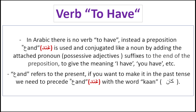In Arabic, there is no verb 'to have.' Instead, a preposition عند is used and conjugated like a noun by adding the attached pronoun suffixes to the end of the preposition to give the meaning 'I have,' 'you have,' etc. عند refers to the present. If you want to make it in the past tense, we need to precede عند with the word كان.